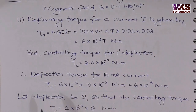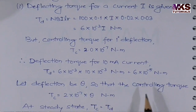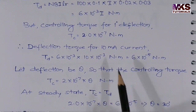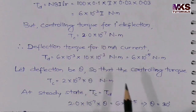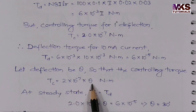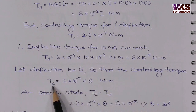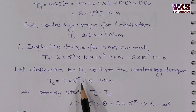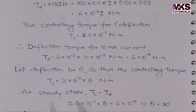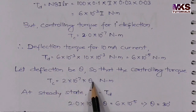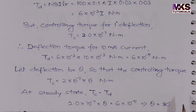Let the deflection be theta degrees. Then the controlling torque TC = 2 × 10⁻⁷ × θ Newton meter. In steady state, controlling torque equals deflecting torque. Setting TC = TD: 2 × 10⁻⁷ × θ = 6 × 10⁻⁵. Solving for theta gives θ = 30 degrees. So for 10 milliampere DC, the deflection is 30 degrees.